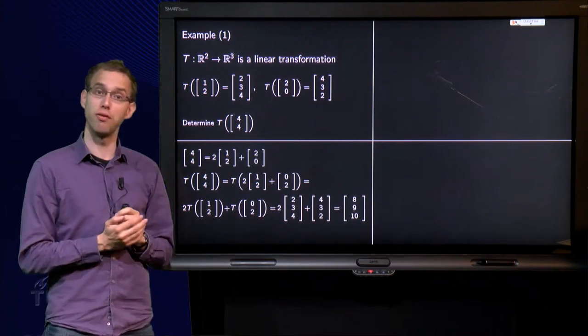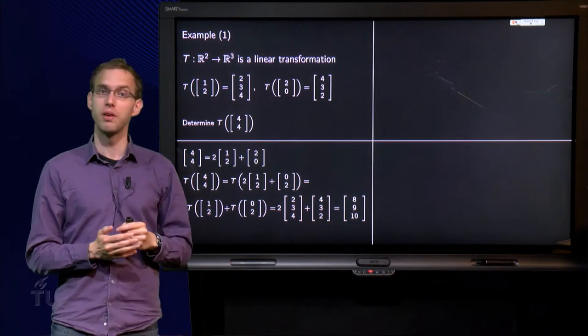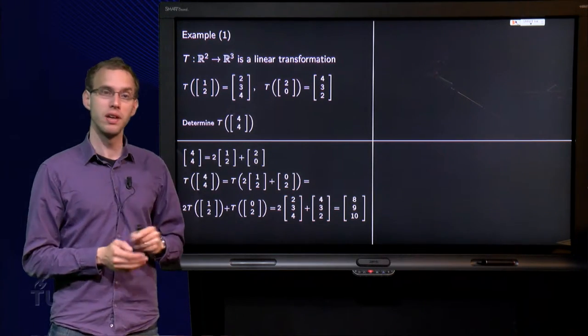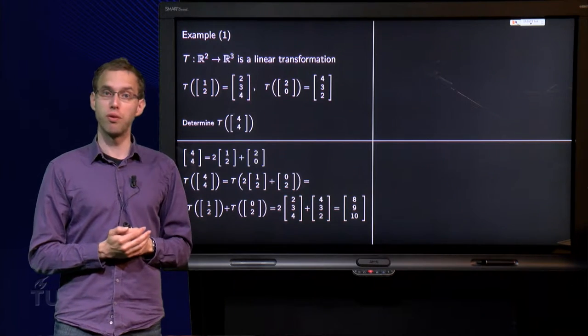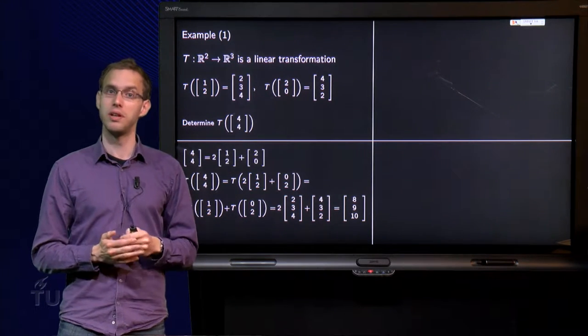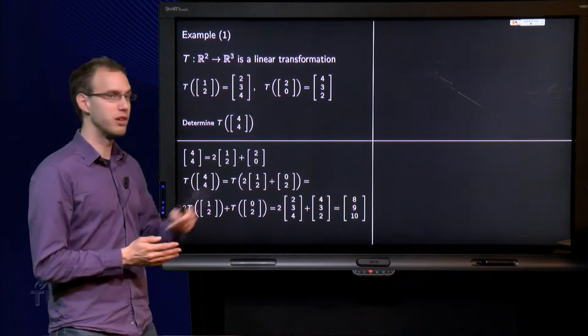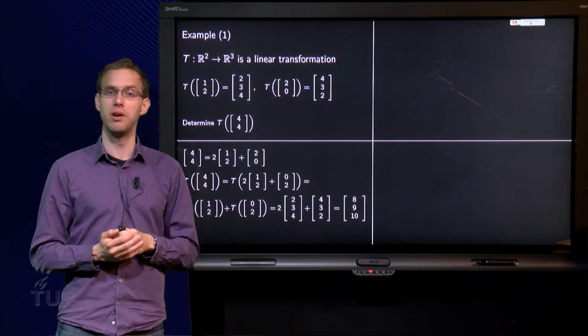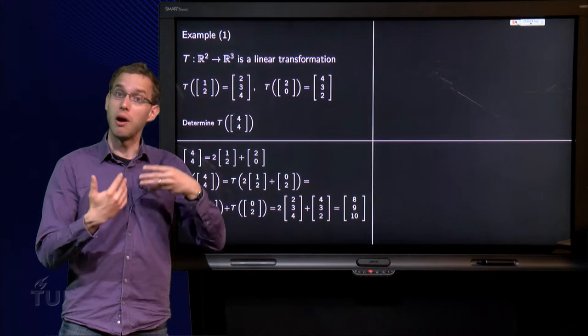And then I see I can write (4,4) as twice (1,2), which gives me the 4 over here. So we get a (2,4) and in order to get (4,4) I have to take once (2,0). So I have written (4,4) as a linear combination of (1,2) and (2,0). Okay, but how does it help us?